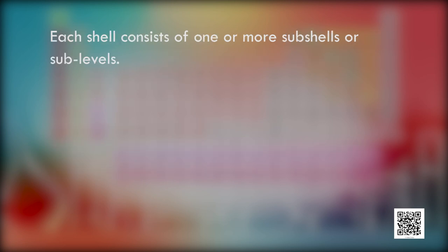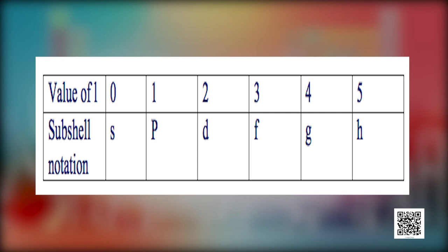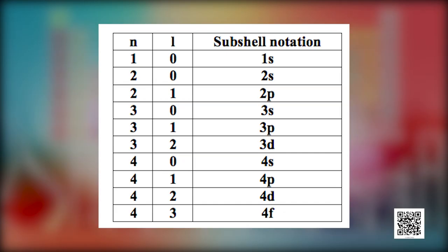The permissible values of L for a given principal quantum number and the corresponding subshell notations are: for N = 1, L = 0 → 1S; for N = 2, L = 0 → 2S; for N = 3, L = 0 → 3S; and for N = 4, L = 3 → 4F. We have now learnt about the two quantum numbers N and L. Now it is time for the third one — the magnetic orbital quantum number ML. This quantum number gives information about the spatial orientation of the orbital with respect to the standard coordinate axes.